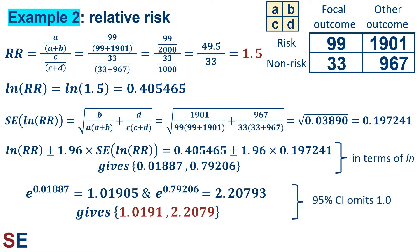This confidence interval doesn't include the value 1.0, which indicates that the sample relative risk is significantly larger than 1. Our best estimate for the population value is 1.5, but there's a 95% chance it's anything from as small as 1.02 to as big as 2.2. It looks like the risk factor probably does increase the chances of seeing the focal outcome in the population.